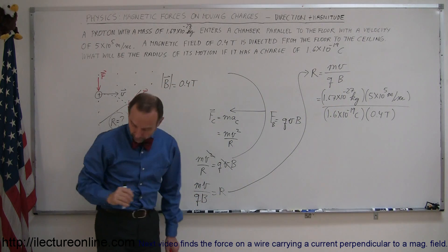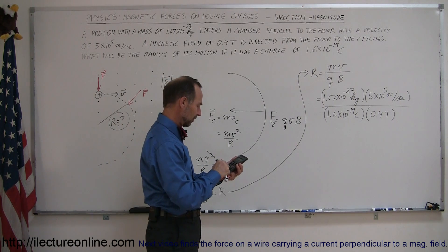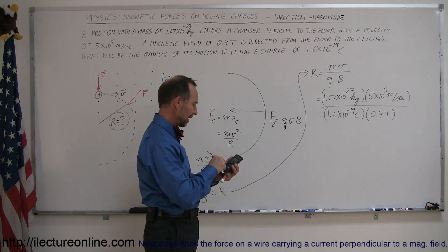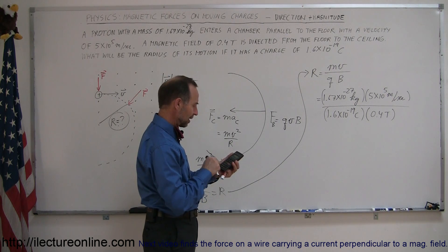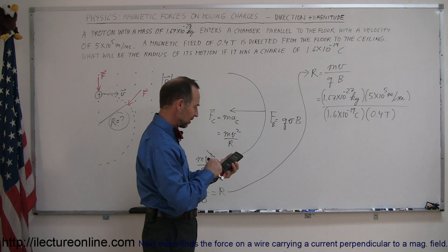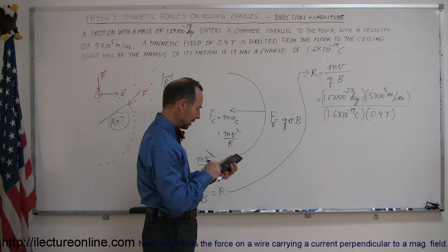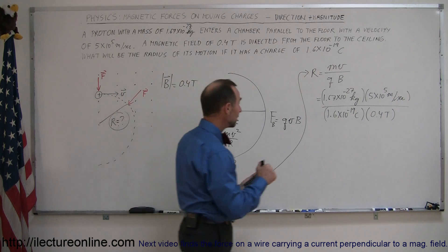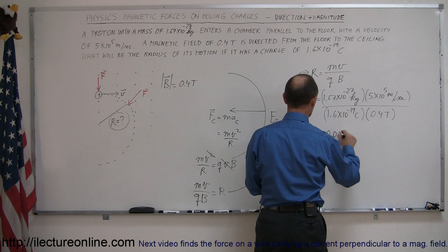All right. So where's our calculator? Let's figure out what that is. So we have 1.67 e to the minus 27, very small mass, times 5e to the fifth equals, divided by the charge, 1.6 e to the minus 19. And then finally divided by 0.4 equals, and the radius R is equal to 0.013 meters.